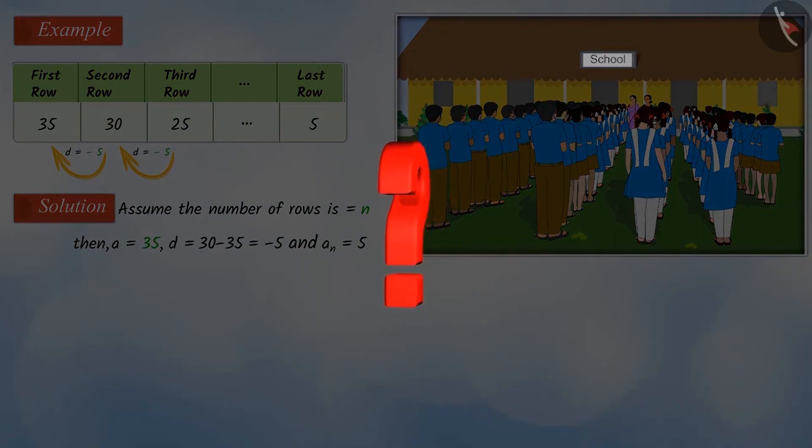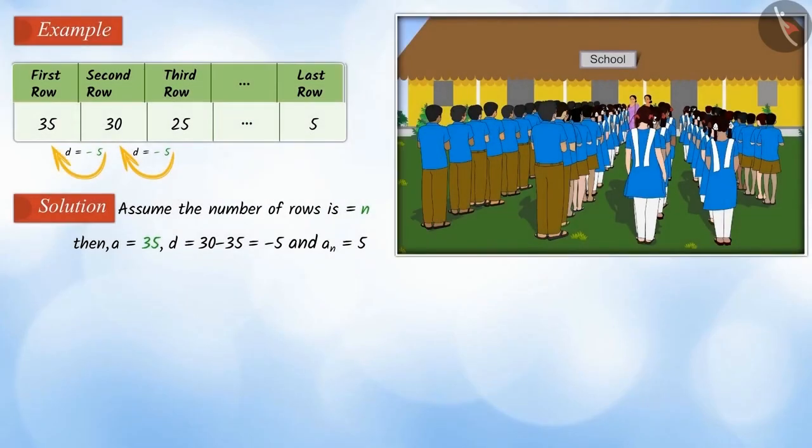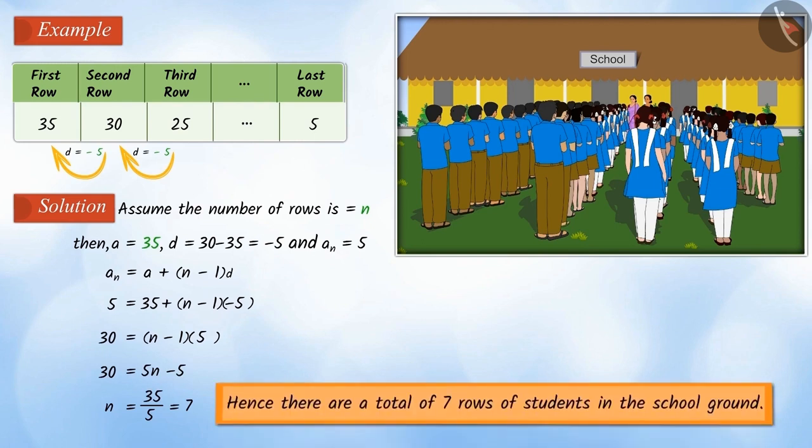Can you tell me, how will we do that? Well done! Looking at the pattern formed above, using the general form of AP, we can solve the problem and obtain the value of N to be equal to 7. Hence, there are total of 7 rows of students in the school ground.